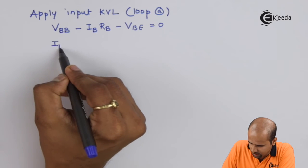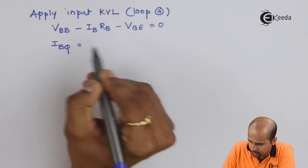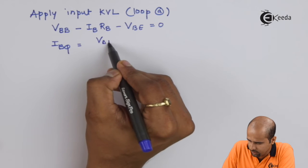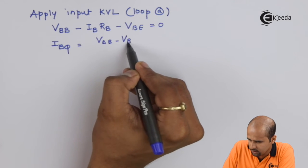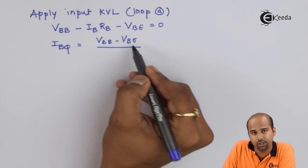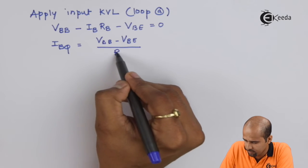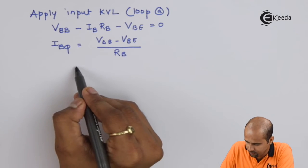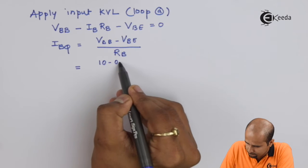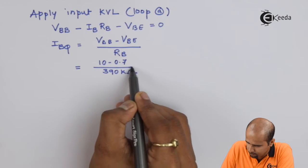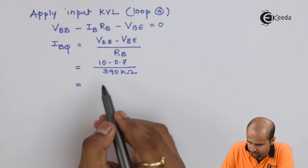For loop A, applying KVL: VBB minus IB into RB minus VBE equals 0. IBQ equals VBB minus VBE divided by RB equals 10 minus 0.7 divided by 390k.